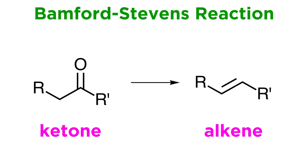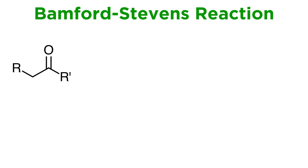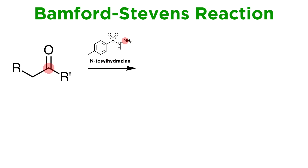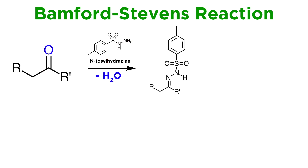The Bamford-Stevens reaction is a method of converting ketones into alkenes, which utilizes carbene chemistry. Consider a ketone treated with N-tosylhydrazine — where a hydrazine is a functional group that involves two adjacent nitrogen atoms. Nitrogen will attack the carbonyl just as an amine would, to generate an imine through dehydrative condensation, meaning the carbonyl oxygen is lost as water, except that since this is a hydrazine, we will end up with an N-tosylhydrazone.